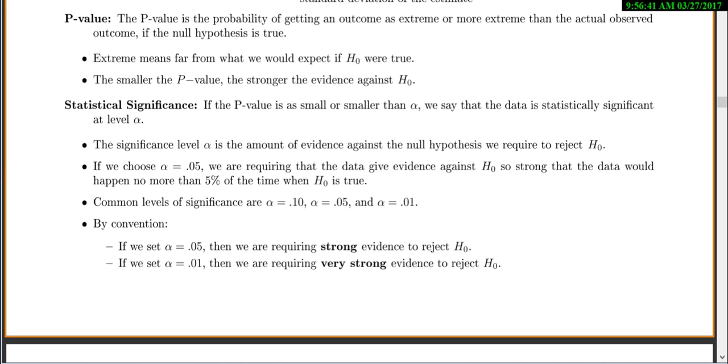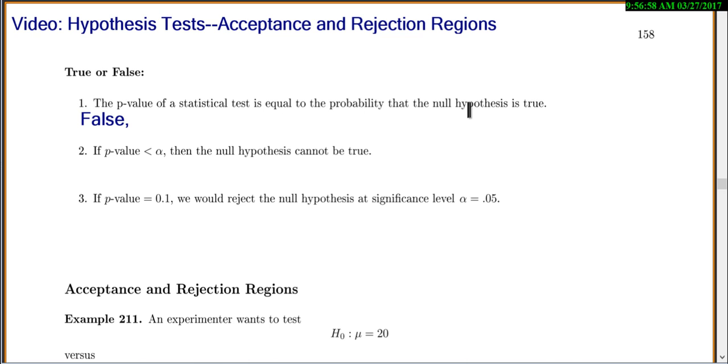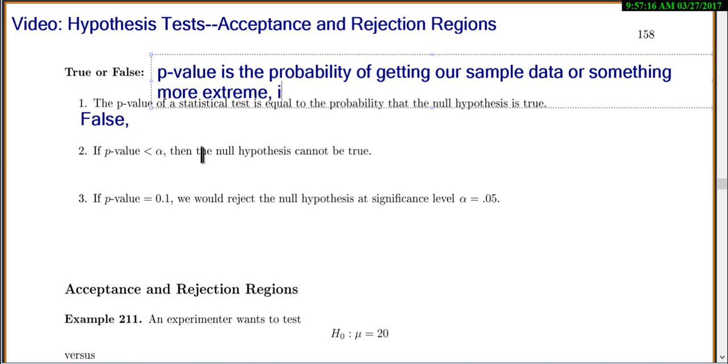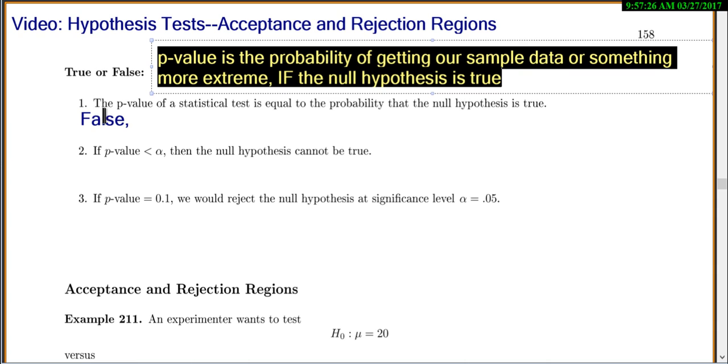it's the probability of getting our sample data or something more extreme if the null is true. That's fairly complicated. We cannot make it simpler. So when we look at what our true or false statement said, we know that it has to be false because our statement just says it's the probability that the null is true.